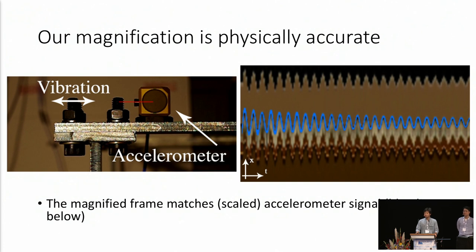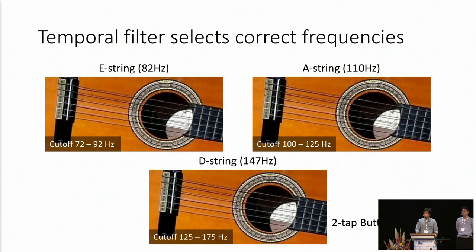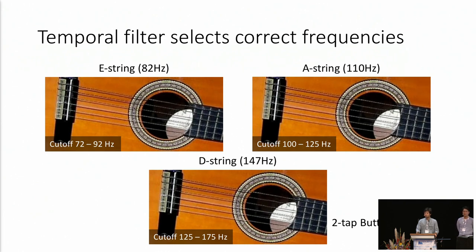To test the physical accuracy of our method, we obtain the hammer sequence from the authors of Wadhwa et al., where accelerometer measurements are available. We double-integrate the accelerometer signal and apply a high-pass filter to avoid drift. The resulting curve matches up well with our magnified motion as shown on the xt-slice. Despite being trained on two-frame input, our method also works with temporal filters. On the guitar sequence, different temporal filters correctly select different strings, suggesting our shape representation is linear enough with respect to displacement to work with temporal filters.